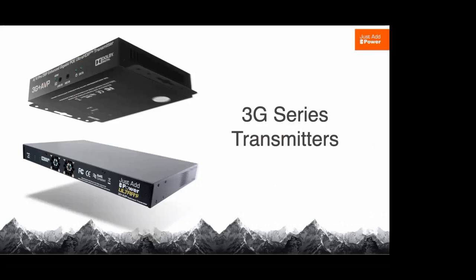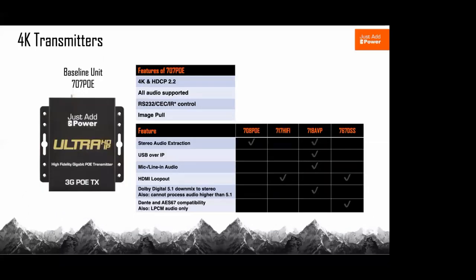Now I'll run over some of the different SKUs — we won't spend a ton of time since it's easy to reference on the website. We always start at a base unit. The base transmitter for us is the 707 PoE — the stripped-down version of our 4K transmitter. It does 4K, HDCP 2.2, all uncompressed audio formats. Then we build off of that: do we want the transmitter to extract audio, downmix audio, do we need USB? That's where we start at one transmitter and build up based on needs per zone.